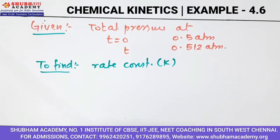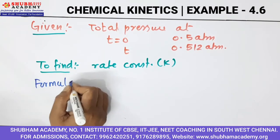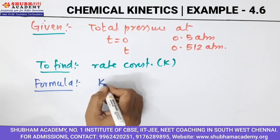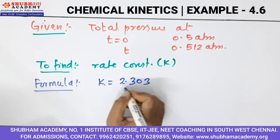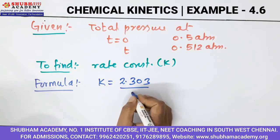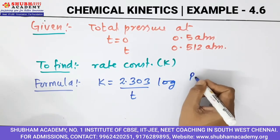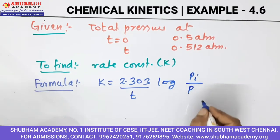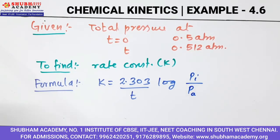The formula we are going to use here is: k is equal to 2.303 divided by T, multiplied by log of P-initial divided by the partial pressure at time t, which we write as P_A.